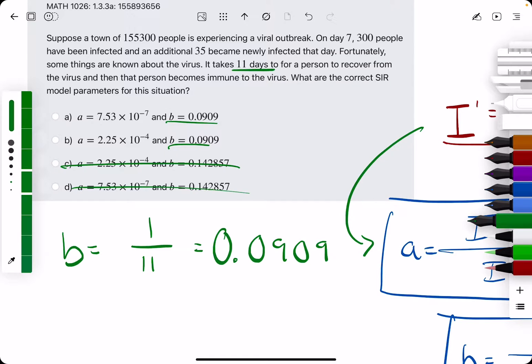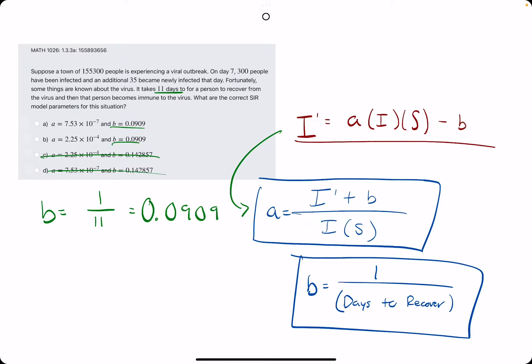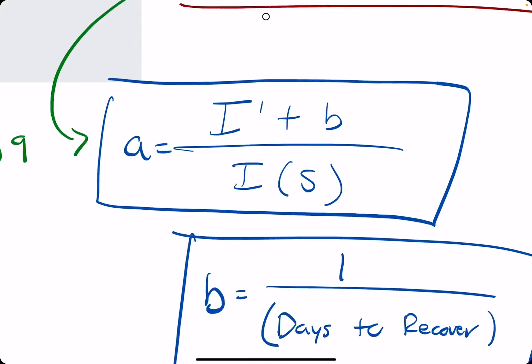So we eliminate options C and D automatically and then now we just have to calculate A. So using our little equation here.